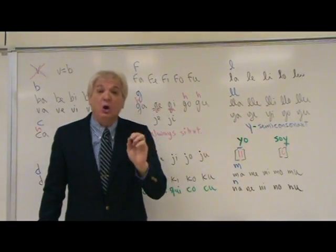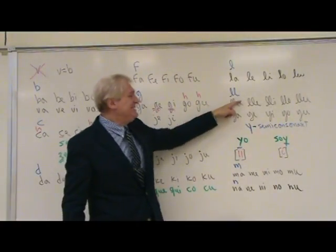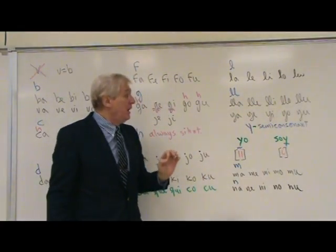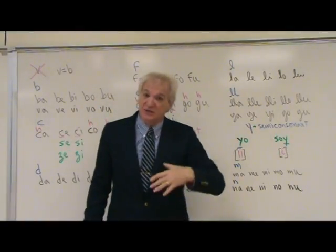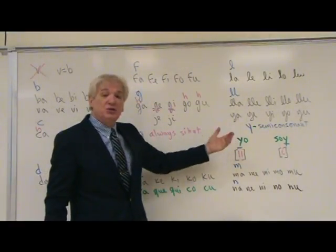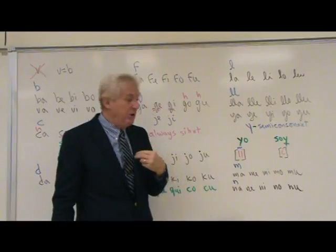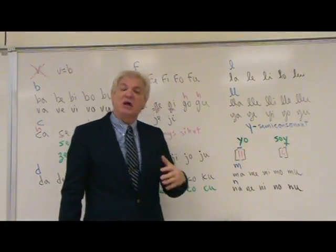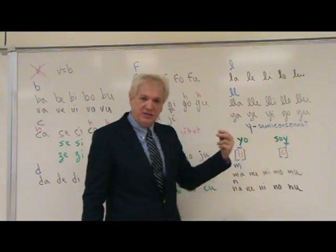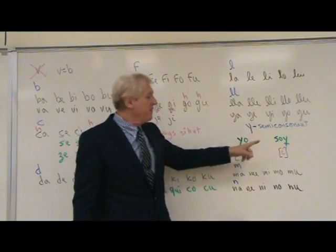Notice that the Y also has the same sound as double-L: Ja, Je, Ji, Jo, Ju. Speaking of the Y — it is a semi-consonant, not purely a vowel or a consonant. In the initial position at the beginning of a word, Y is pronounced like J, as in 'yo'. But if Y appears at the end of a word, usually after a vowel, it is pronounced like the letter E — as in 'soy', meaning I am.